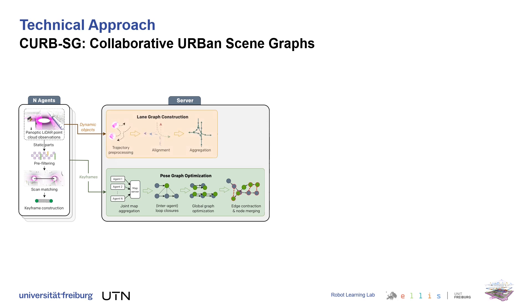The server further continuously maintains the lane graph based on the trajectories of both the ego agents as well as the detected dynamic objects. To partition the environment, we utilize this lane graph to detect intersections.